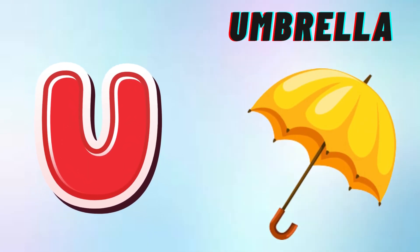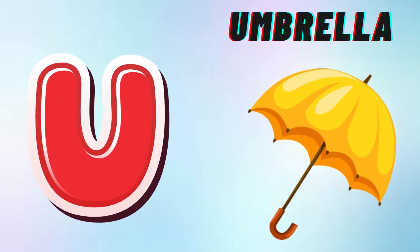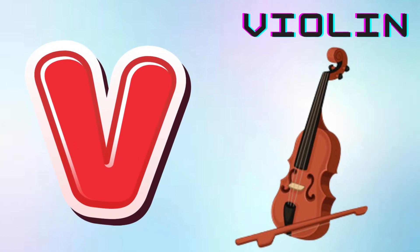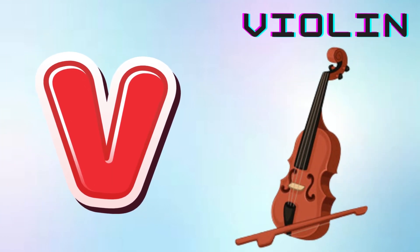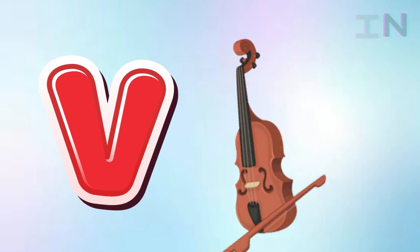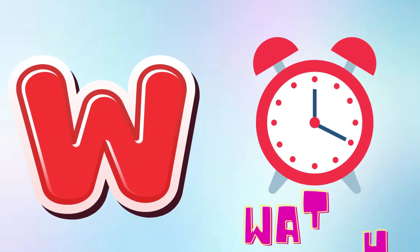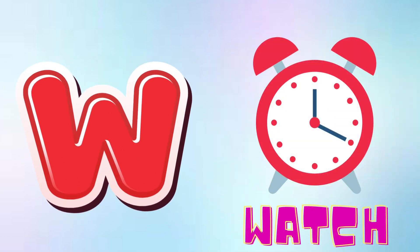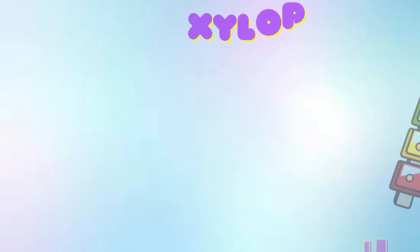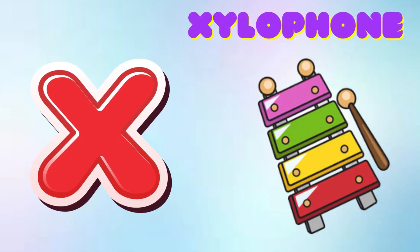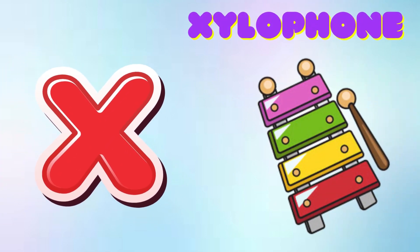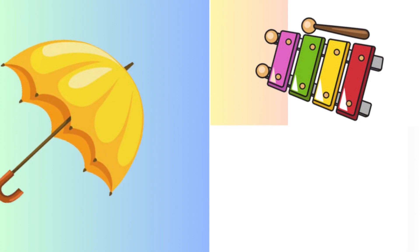U is for Umbrella, U-U-Umbrella. V is for Violin, V-V-Violin. W is for Watch, W-W-Watch. X is for Xylophone, X-X-Xylophone.